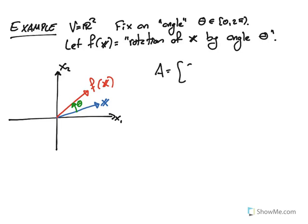You can verify that if A equals [cos(θ), sin(θ); -sin(θ), cos(θ)], then f of x is simply Ax. And I think this example came up earlier in the semester. All right, so this is also a linear map.